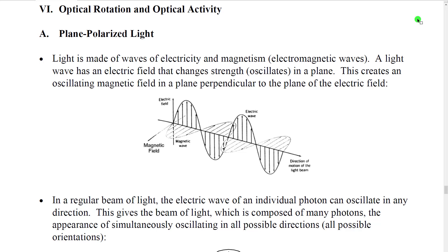In the next section, we're going to discuss one important physical property that we see with chiral molecules. This property is called optical rotation, and we're going to discuss a related term called optical activity.